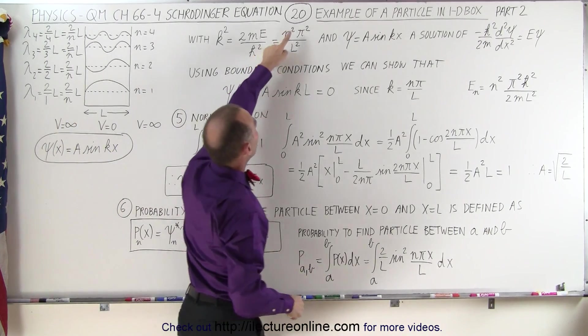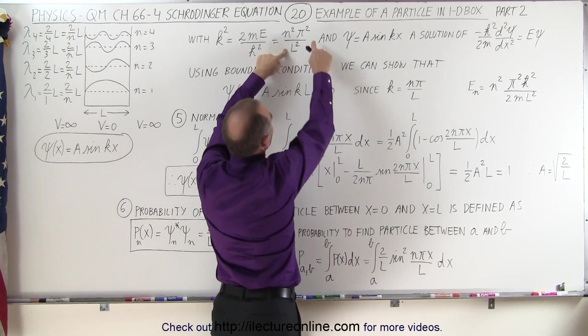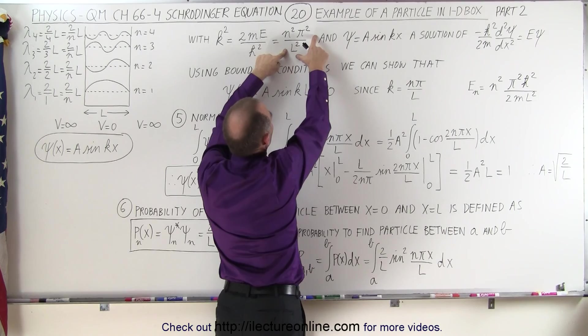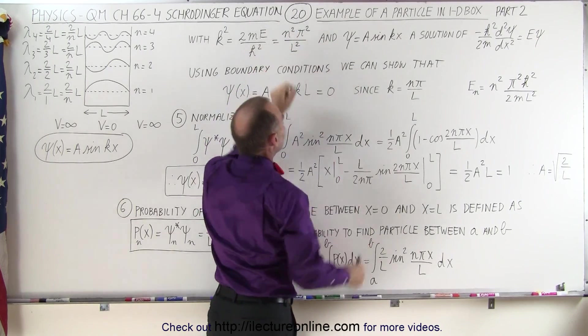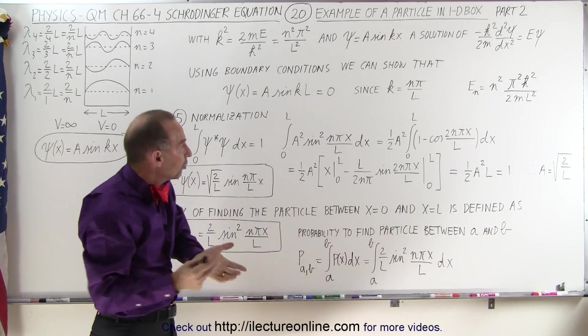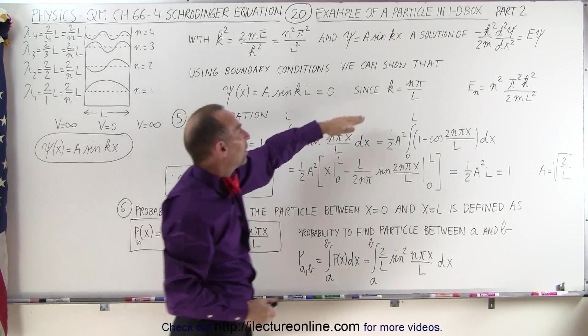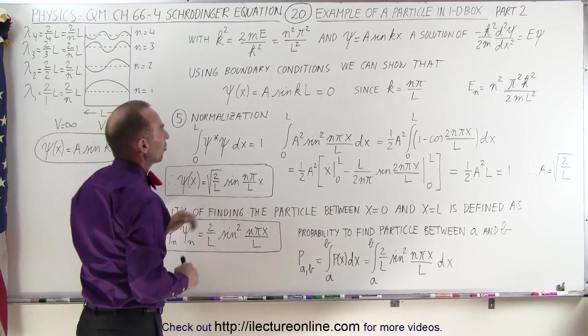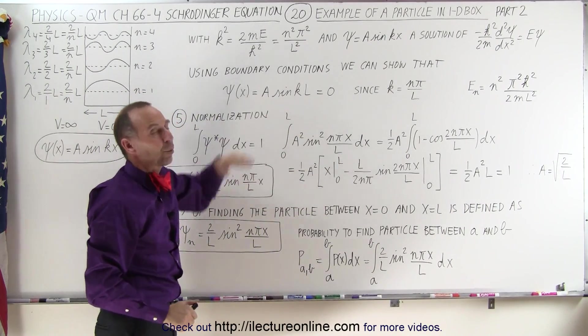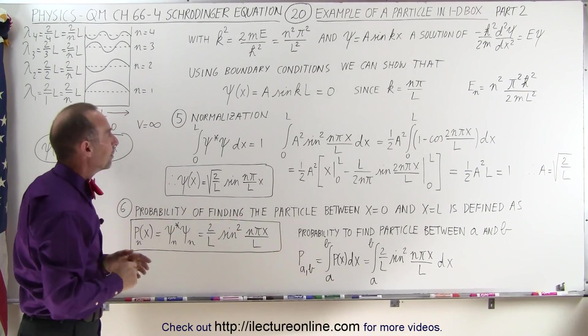Notice, when k is equal to n pi over l, and we multiply that times l, l divided by l goes to zero, and we end up with the sine of an integer number times pi, and the sine of an integer number times pi always equals zero, which therefore means that we meet the boundary conditions, and this is a valid wave equation for a particle in a box.